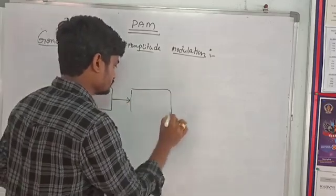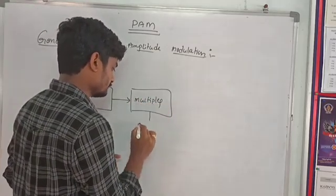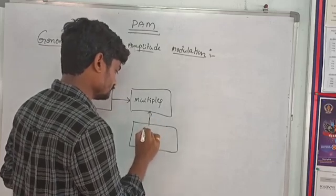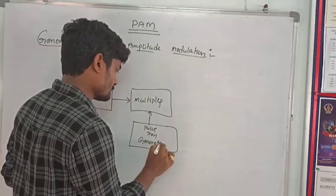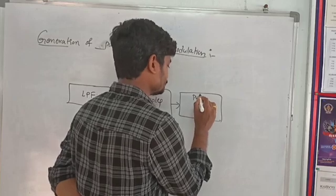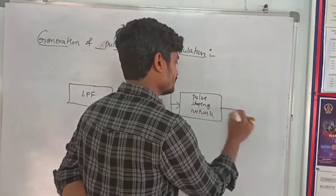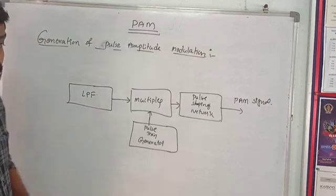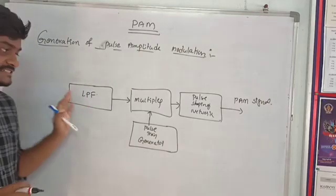Next we have the Multiplier. This is the pulse train generator — this is the carrier. This is the pulse shaping network. This is also called band limiting.